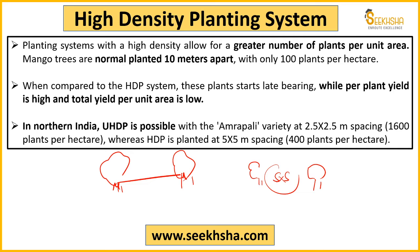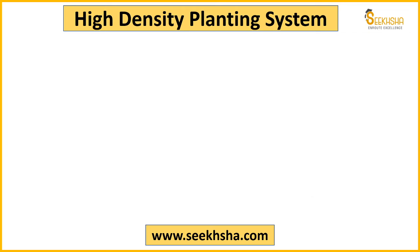After high density planting, there is ultra high density planting where you reduce the space even further. In normal planting, 10×10 meter distance is used; in HDP we bring it to 5×5 meter. So where you had only 100 plants per hectare, in high density planting you get around 400 plants per hectare. Ultra high density planting is practiced in some northern Indian states, especially with the Amra Pali variety, where spacing can be as close as 0.5×0.5 meters, giving 1600 plants per hectare.